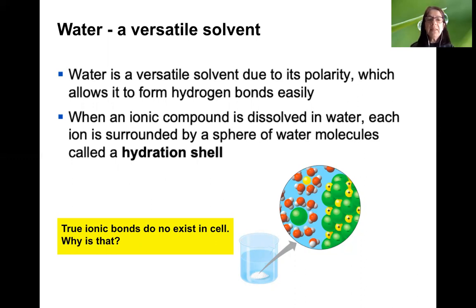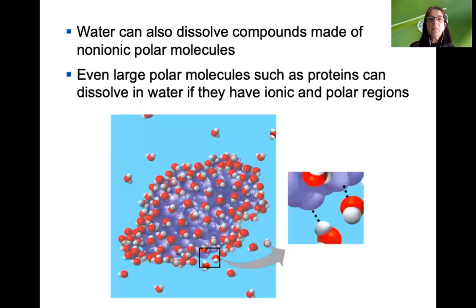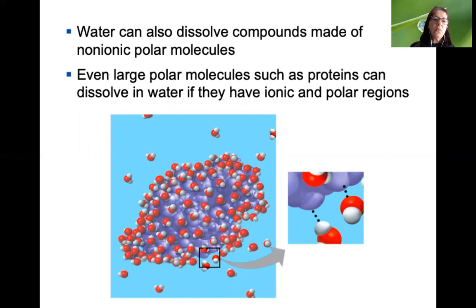True ionic bonds do not exist in a cell — because an ionic compound really is a highly ordered crystal structure, and in water those crystal structures are broken up and dissolved. So there are no true ionic bonds in a cell because a cell is water-based. Water can also dissolve compounds made of non-ionic but polar molecules. As long as a molecule has some kind of polar or charged surface, it can form hydrogen bonds with water. A protein — a large biological molecule — is shown with a hydration shell; water covers its surface wherever there is a polar or charged region.